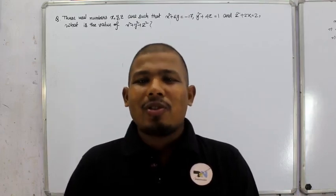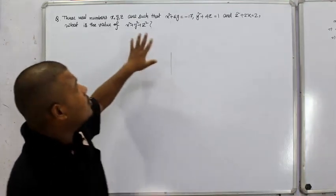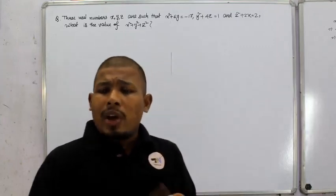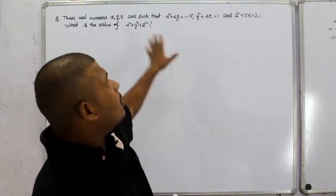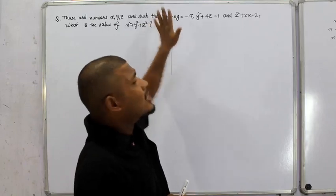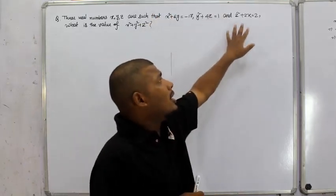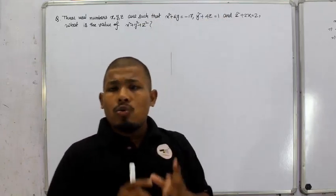We have three real numbers x, y, and z that satisfy: x squared plus y equals minus 17, y squared plus 4z equals 1, and z squared plus 2x equals 2.